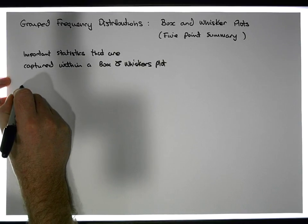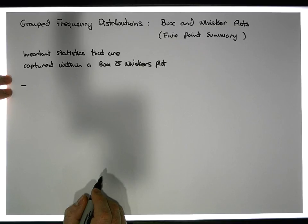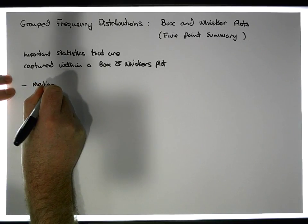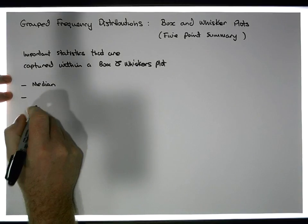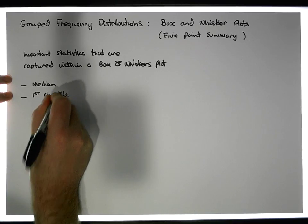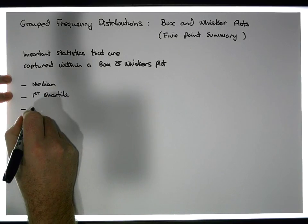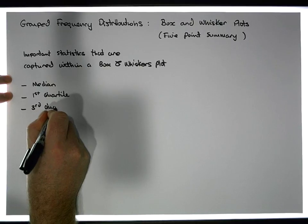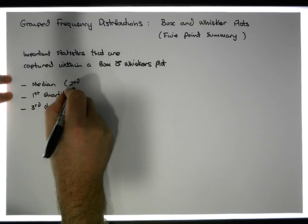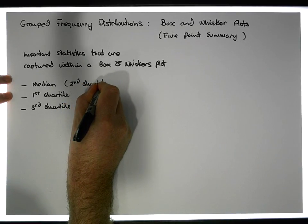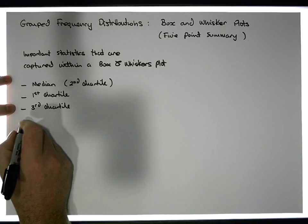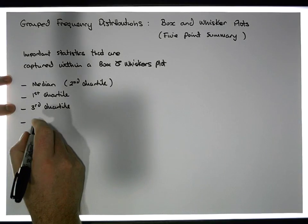The first statistic captured within a box and whiskers plot is the median. The next thing captured is the first quartile, and then the third quartile. Keep in mind that the median is by definition the second quartile.